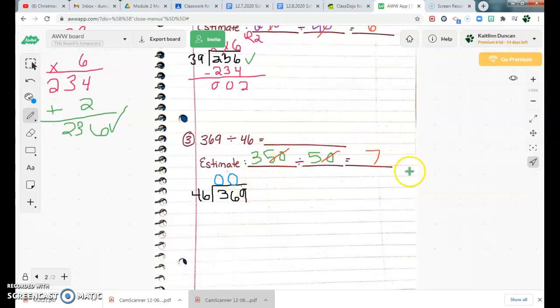So I'm going to go over here, and I'm going to see if it can go in there seven times. Just because that's what my estimation is telling me. So I'm going to do 46 times 7. Just to see what I get. Again, I want to be as close to 369 as possible without going over. 7 times 6 is 42. So 2 carry the 4. 7 times 4 is 28. 28 plus 4 is 32.